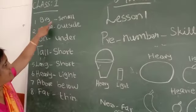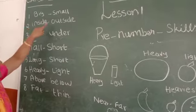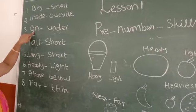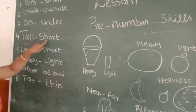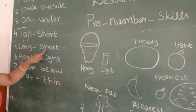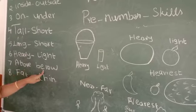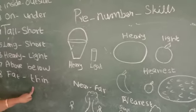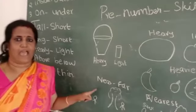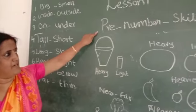Big, small, inside, outside, on the table, under the table, tall, short, long, short, heavy, light, above, below, fat, thin. Now you understood, I think so. Thank you children for watching this pre-number skills video.